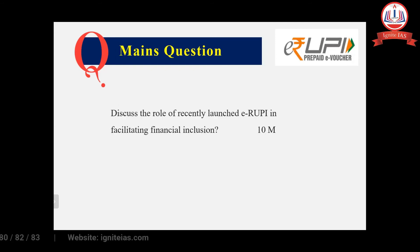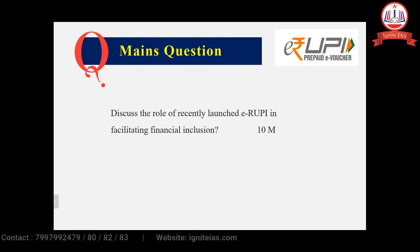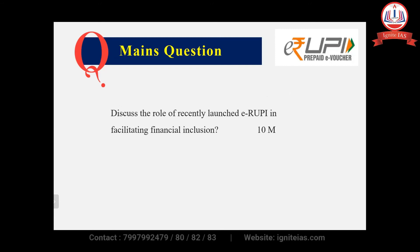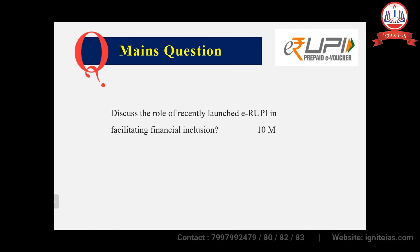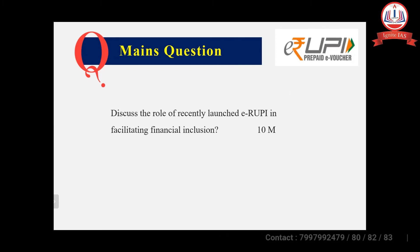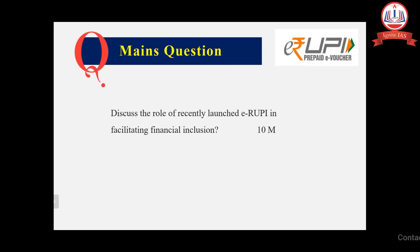Here is a mains question about E-Rupee: Discuss the role of recently launched E-Rupee in facilitating financial inclusion. In your answer, include factual information about features of E-Rupee that ensure financial inclusion, such as timely payment, leak-proof delivery, and adequate credit to the beneficiary, and explain how E-Rupee will help achieve financial inclusion. You may take a screenshot or note it down.